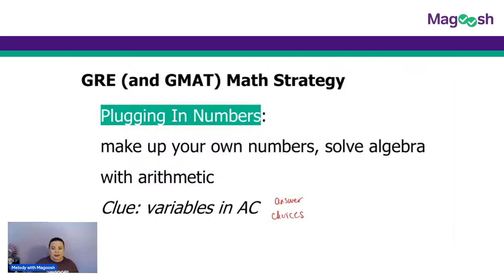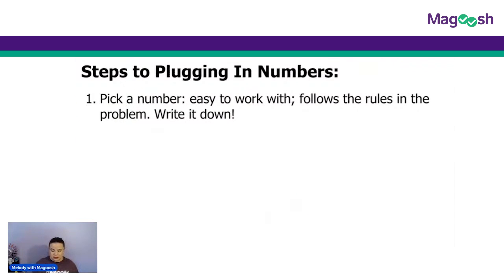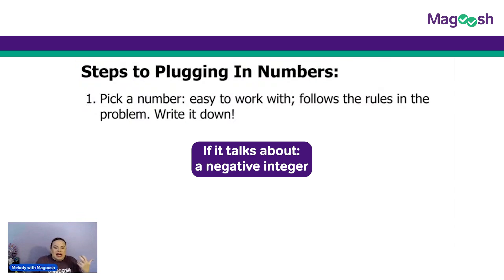Here are the basic steps that we're going to need to follow. Number one, pick a number that's easy to work with and follows the rules in the problem. What does that mean? If the problem says we're talking about a negative integer or a multiple of three, you have to follow those rules.